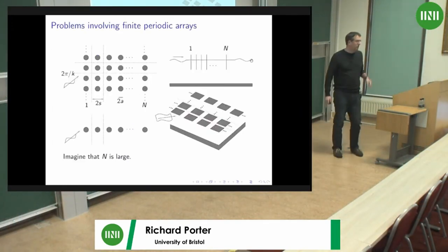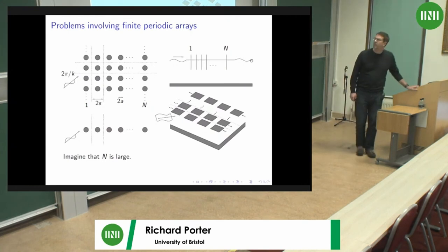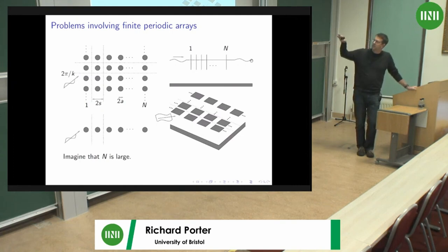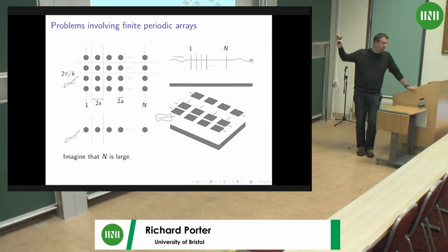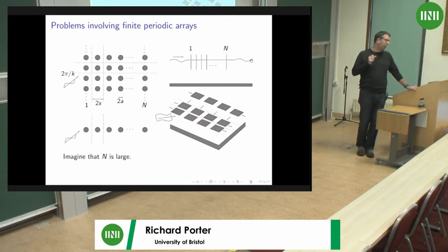So here are four different pictures of what I regard as being scattered by finite periodical arrays. Starting in the top left-hand corner, that's the one I'll be thinking of in terms of setting up the theory initially. This is a system whereby you've got a wave coming in from the left, being scattered from the left-hand edge by a series of circular cylinders. This might be an acoustic problem, governed by the two-dimensional wave equation. There are n rows, and they extend periodically in the vertical direction to infinity.